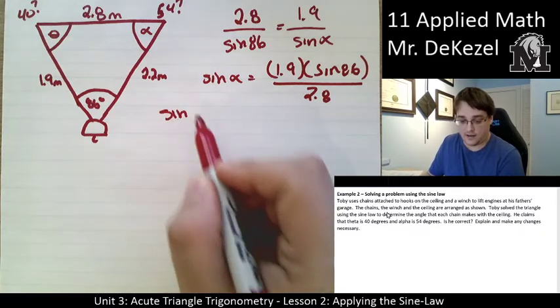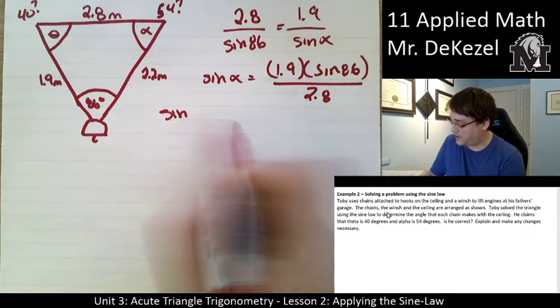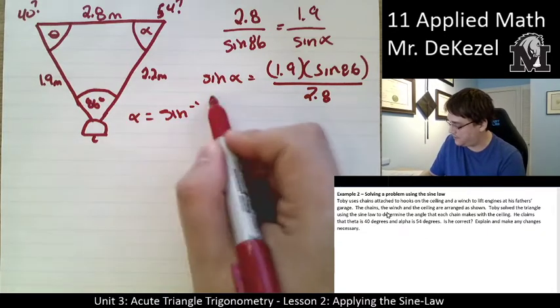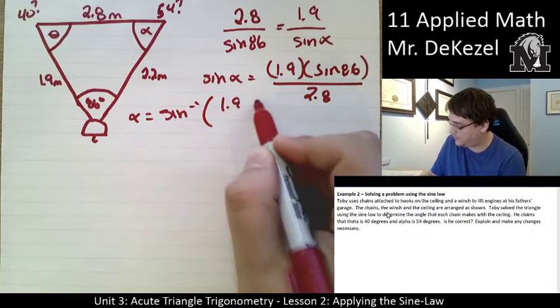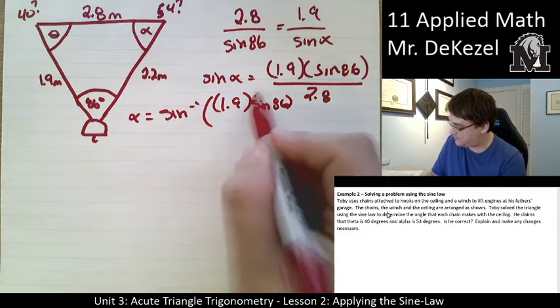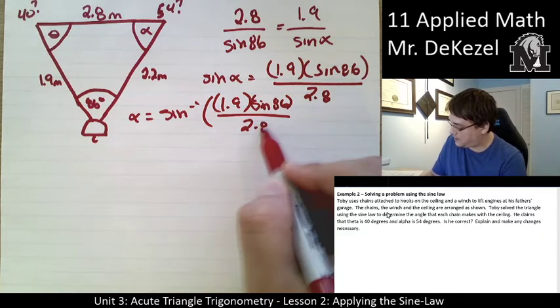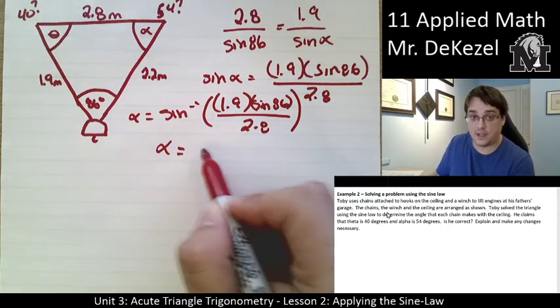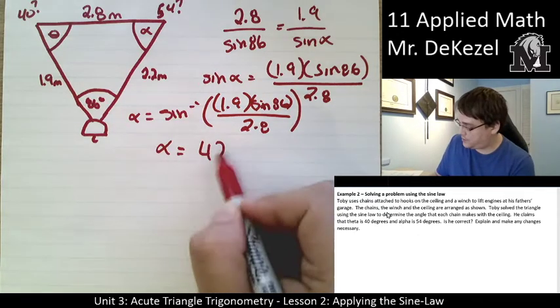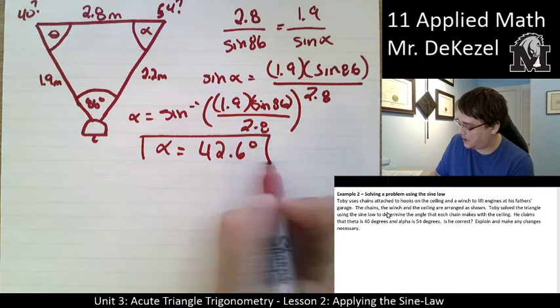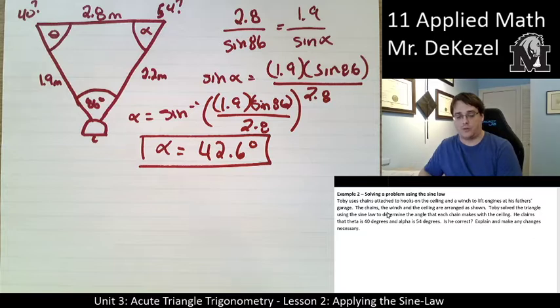We're then going to inverse that. So alpha is equal to the inverse sine of 1.9 times the sine of 86 divided by 2.8. We find out that alpha is 42.6 degrees.